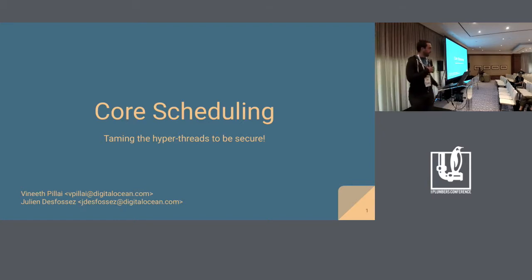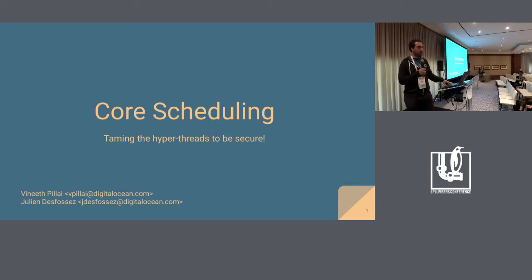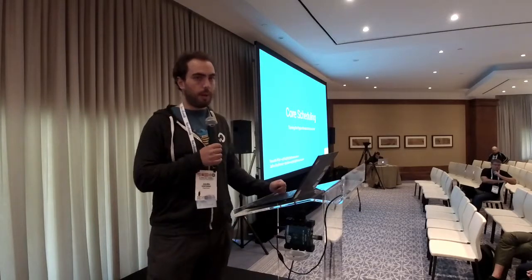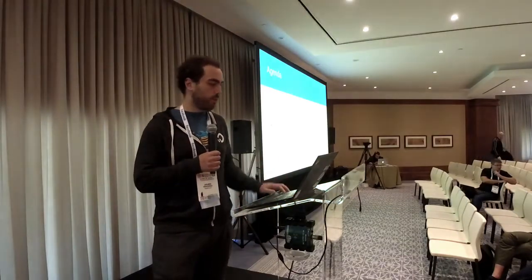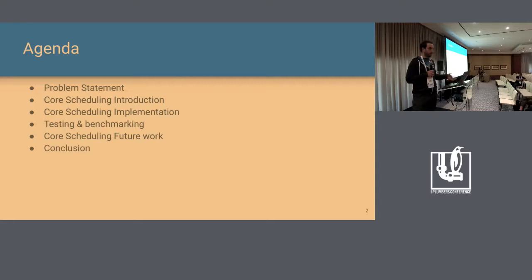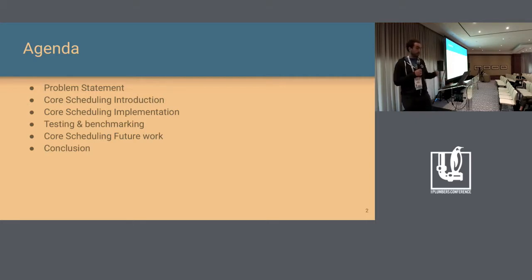Today we are going to talk about core scheduling, a feature that has been in development for about a year on the LKML. The goal is to make the use of hyperthreading secure with respect to the various security vulnerabilities we are seeing. Today we will show you why we need this feature, what the feature actually is, what roadblocks and problems we encountered during the past year, how we tested it, and what the next steps are.